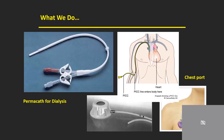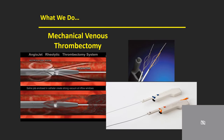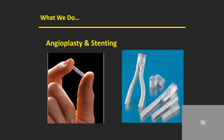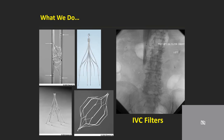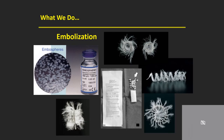Through this technique, interventional radiologists can place lines such as ports, PICCs, and tunnel catheters. We can unclog blood vessels with mechanical venous thrombectomy. We can open blood vessels with angioplasty and stenting. We can prevent clots from blocking blood vessels with IVC filters of all different shapes, sizes, and different levels of permanence. We can also block blood vessels with embolization, using temporary embolization agents, permanent agents, and coiling.